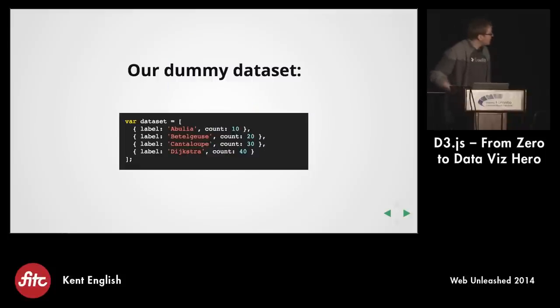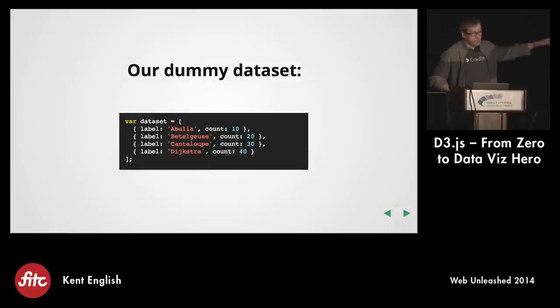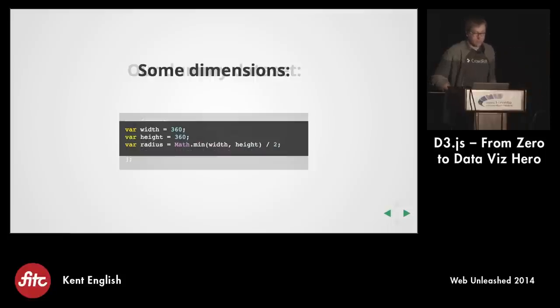We have these four path elements that correspond to the four segments of the pie. This is the data set we're using — I just made up some data. The key thing to note is that each object has a label and a count, and we're going to be making use of that as we go along.